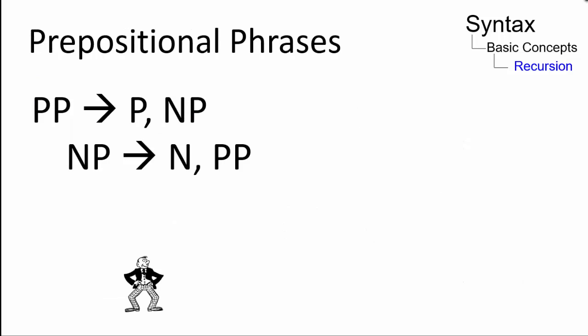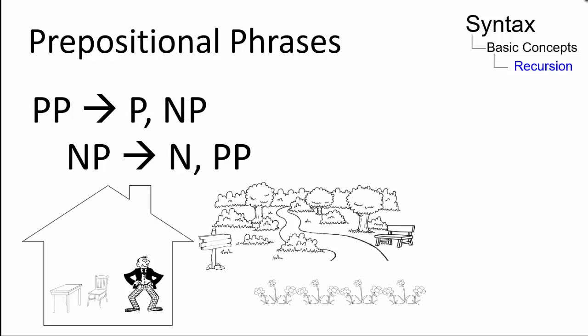Prepositional phrases also lend themselves to recursion. Jack can be sitting on the chair, at the table, in the house, by the park, in the town, with the garden, next to the lake, and so on.